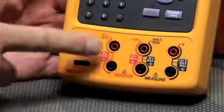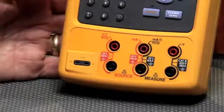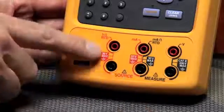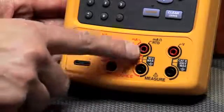You'll notice that there's red writing in the calibrator and black writing. The red writing is for sourcing volts DC and RTDs and sourcing milliamps.